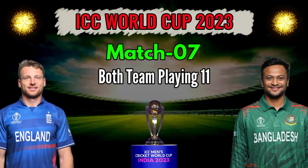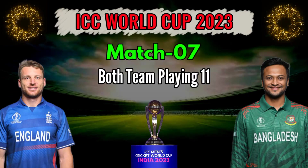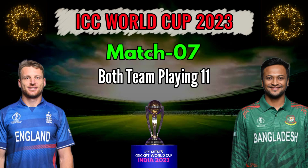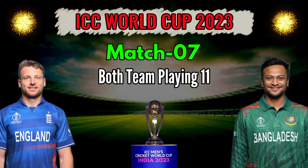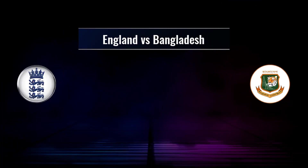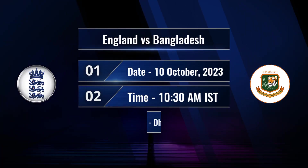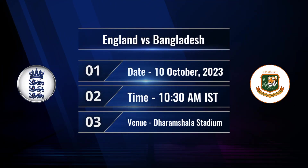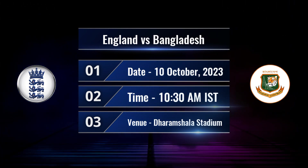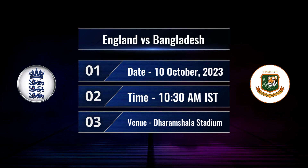ICC Cricket World Cup 2023, England vs Bangladesh. Match details and Best Playing 11. Date: 10 October 2023, 10:30 AM Indian Standard Time. Venue: Dharamsala Stadium, Dharamsala.